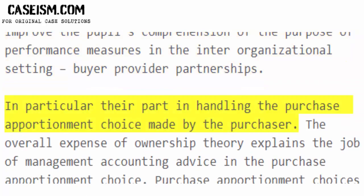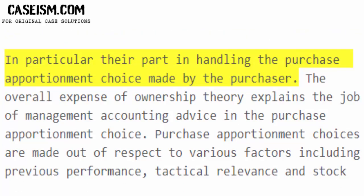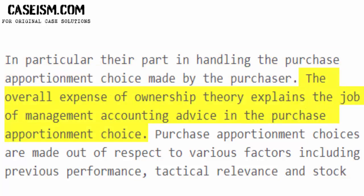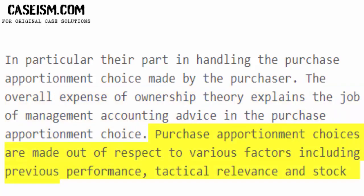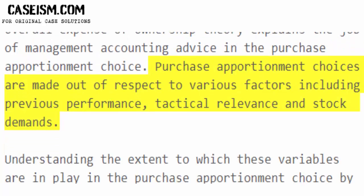In particular, their part in handling the purchase apportionment choice made by the purchaser. The overall expense of ownership theory explains the role of management accounting advice in the purchase apportionment choice. Purchase apportionment choices are made with respect to various factors including previous performance, tactical relevance, and stock demands.